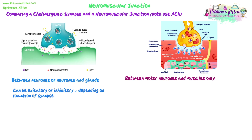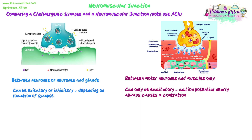The cholinergic synapse can be excitatory or inhibitory — that depends on the location of the synapse. In some places acetylcholine synapses are excitatory, but as we noted, in the heart they can be inhibitory as well. In the neuromuscular junction, the synapses are always going to be excitatory — pretty much every time an action potential arrives at one of those motor neurons, it always causes a contraction, because that's what we're trying to do.